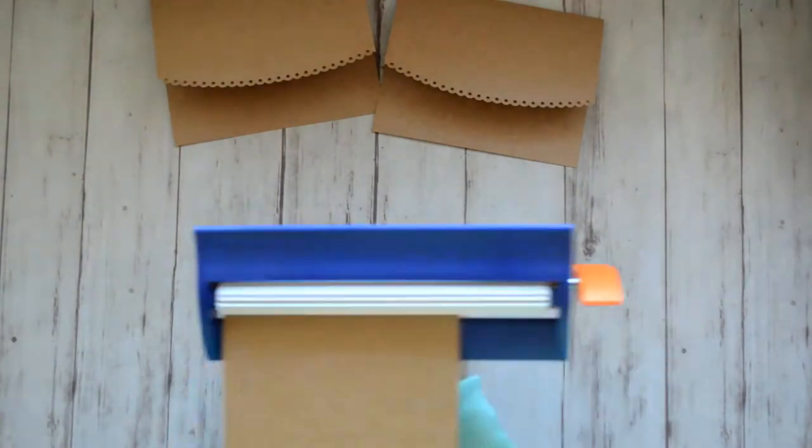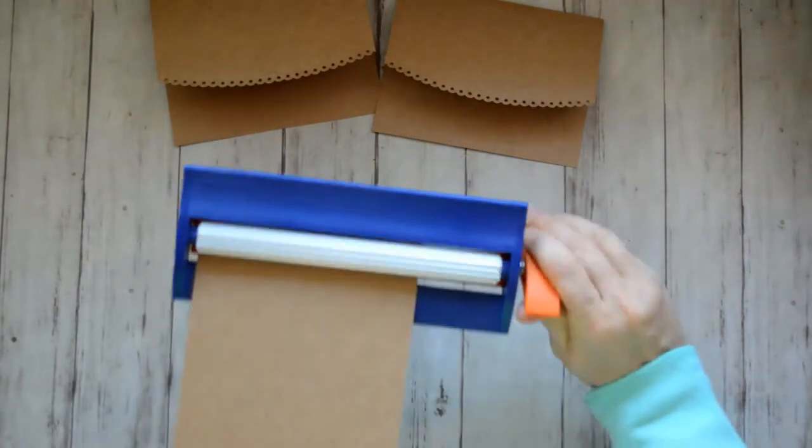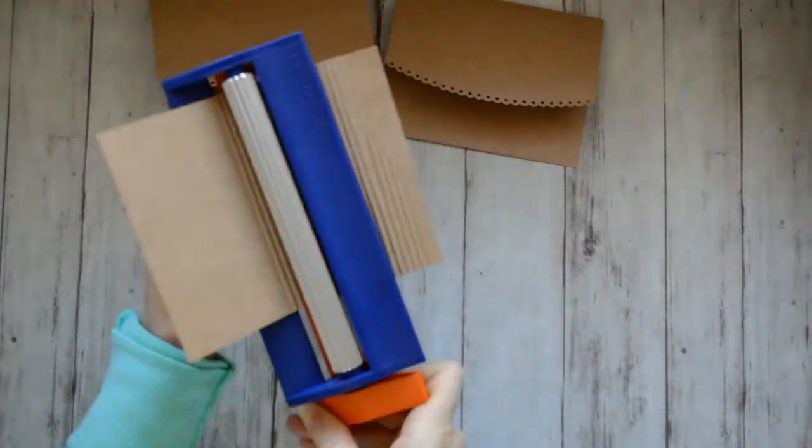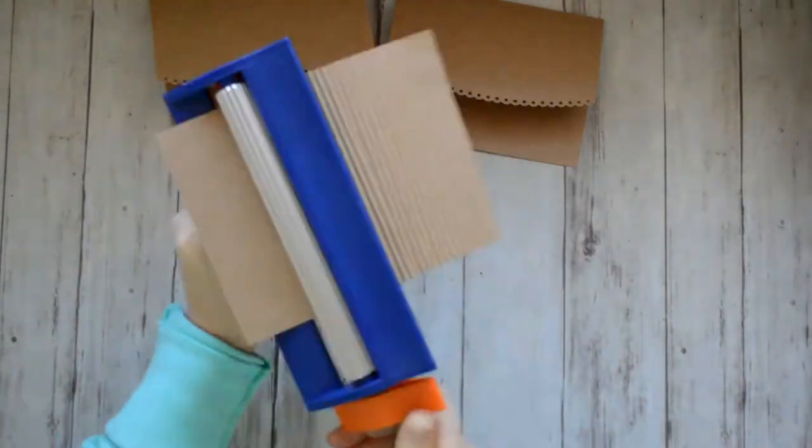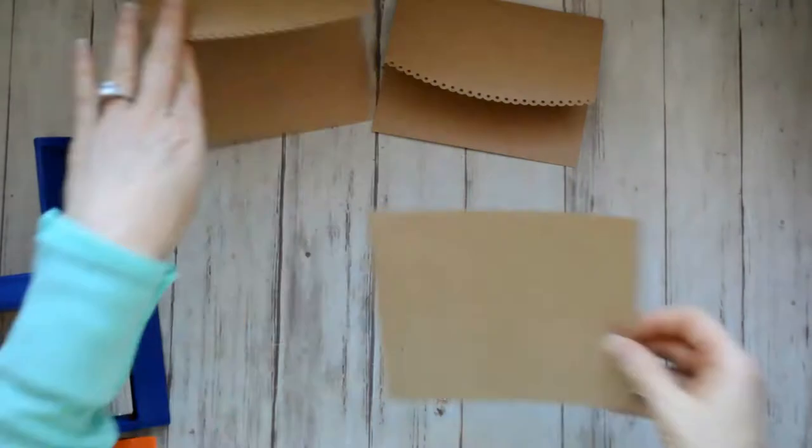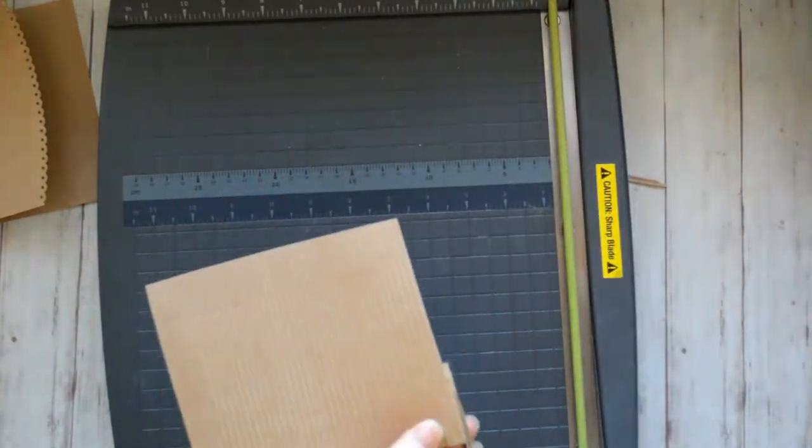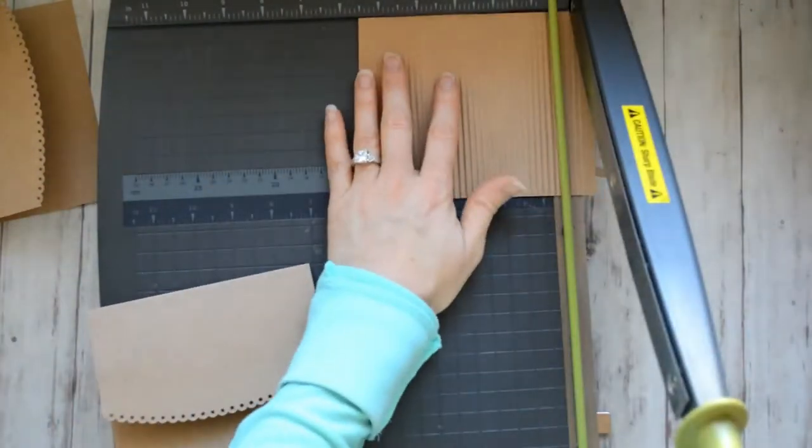And I've got the paper crimper here. Now I love this corrugated look, but I struggle with getting it straight. It really, the paper just wants to kind of veer.